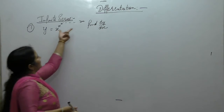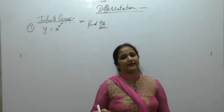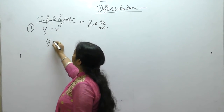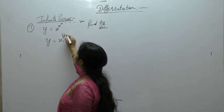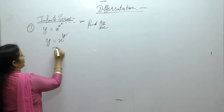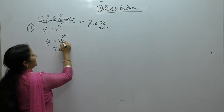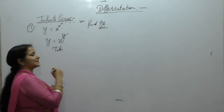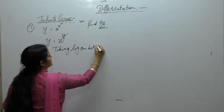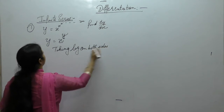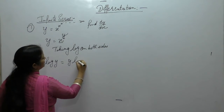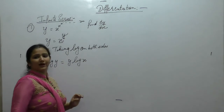If we delete one term from an infinite series, the series still remains infinite. So we can write y as x^y. Now, taking log on both sides — because here we have variable raised to variable power — we get log y equals y·log x.